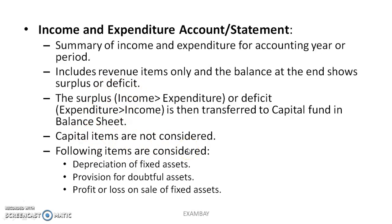Not all items are considered - only the following items are considered in the Income and Expenditure Account, and this is an important point: depreciation of fixed assets is also considered, provision for doubtful assets is considered, and profit or loss on sale of fixed assets is also considered. These three points you have to remember - this may be formed as a question in your exam.